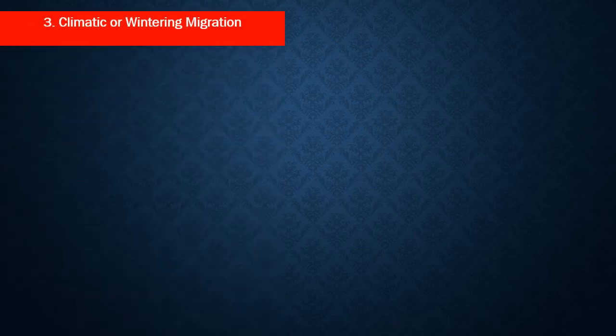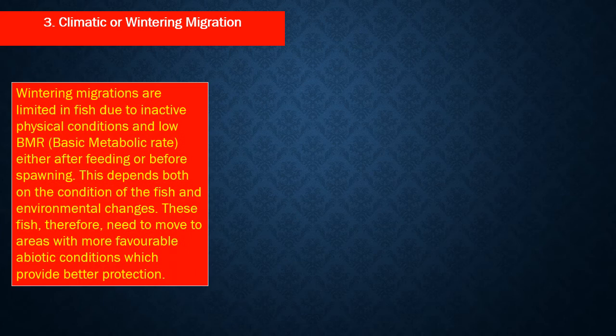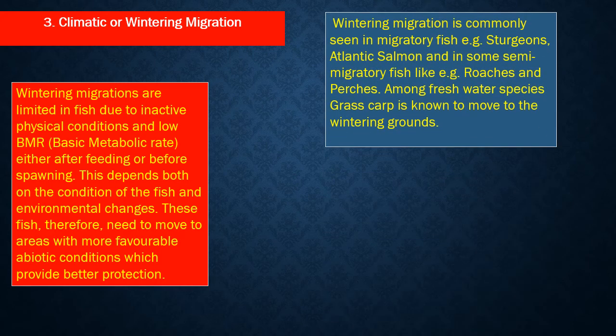Climatic or wintering migration. Wintering migrations are limited in fish due to inactive physical conditions and low basic metabolic rate, either after feeding or before spawning. This depends both on the condition of the fish and environmental changes. These fish need to move to areas with more favorable abiotic conditions which provide better protection. Wintering migration is commonly seen in migratory fish such as sturgeons, Atlantic salmon, and in some semi-migratory fish like roaches. Among freshwater species, grass carp is known to move to the wintering grounds.